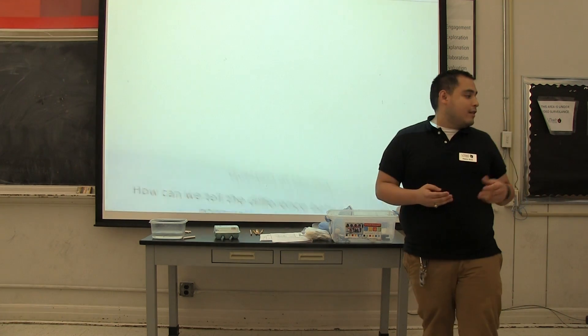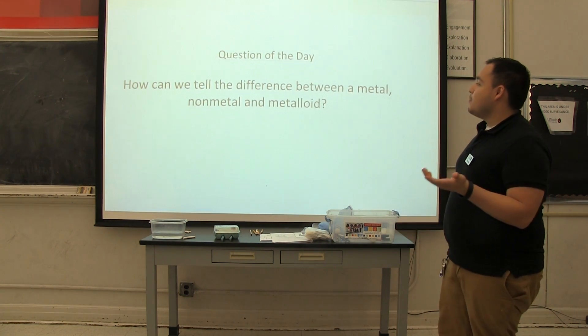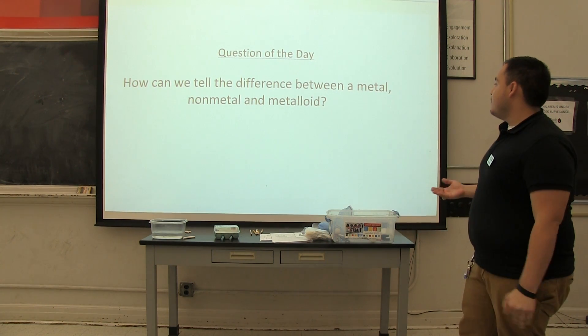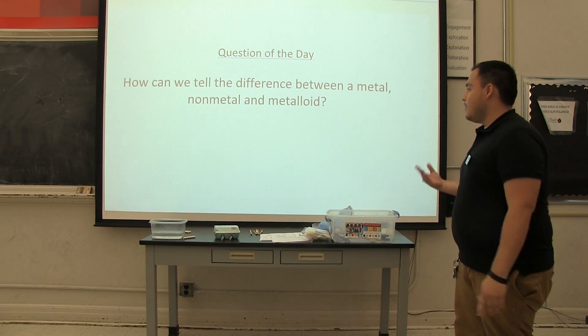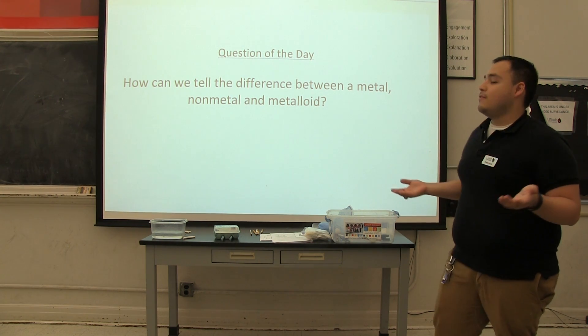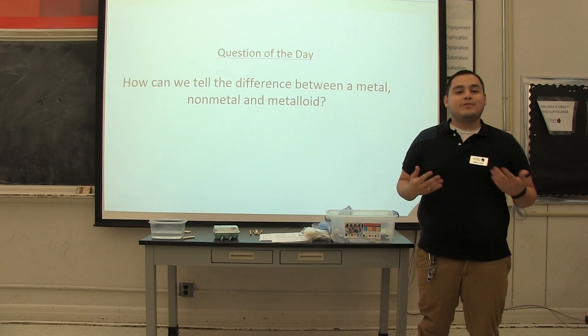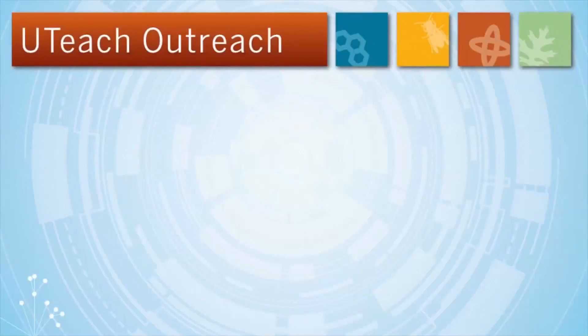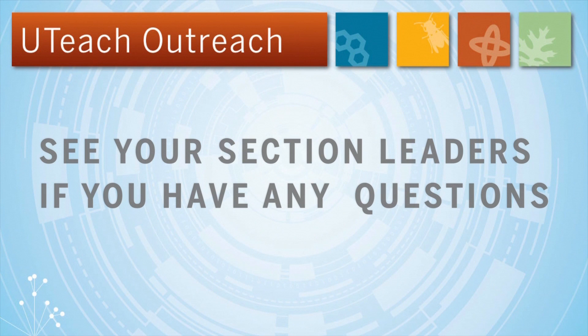So on that note, we are finally able to answer our question of the day. How can we tell the difference between a metal, non-metal, and metalloid? We just use their physical properties and anything that we can observe. So that's all we have for you today. We'll see you guys next week.